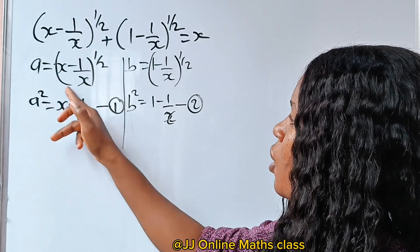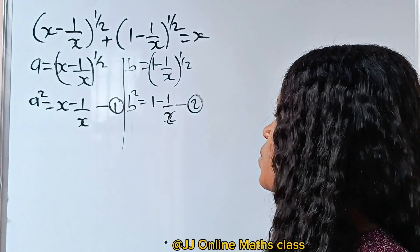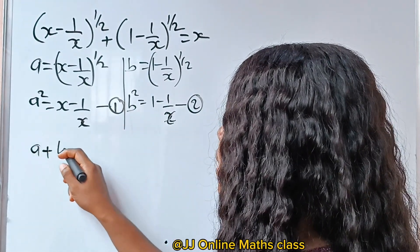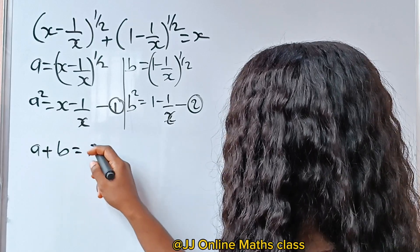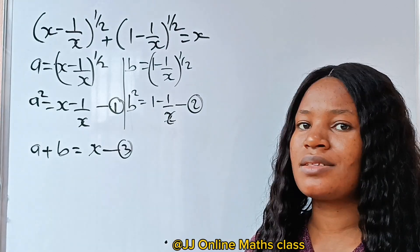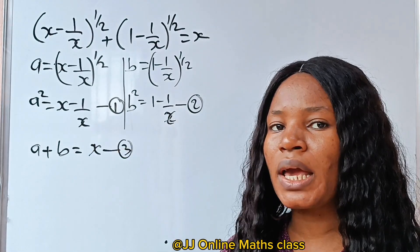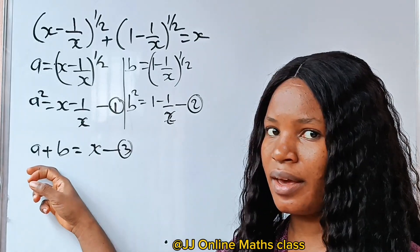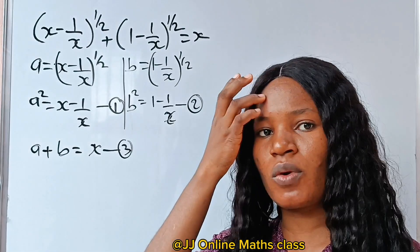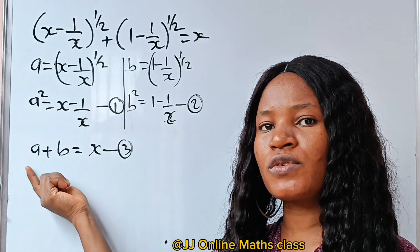If we say let a equal this and b equal this, that means we can rewrite the original equation as a plus b equals x. Let's call this equation 3, because all these equations will be needed somewhere. Now I want to bring in the difference of two squares, because I have a value for a squared and a value for b squared.